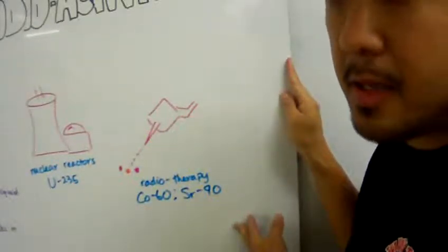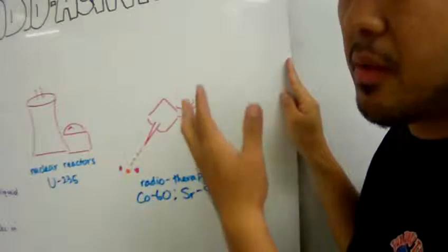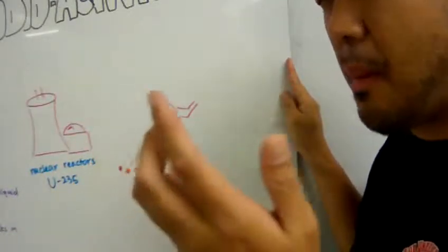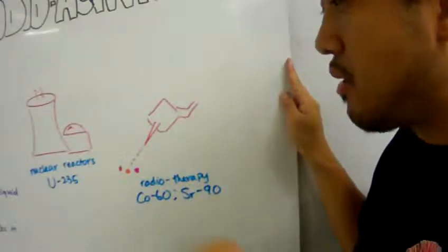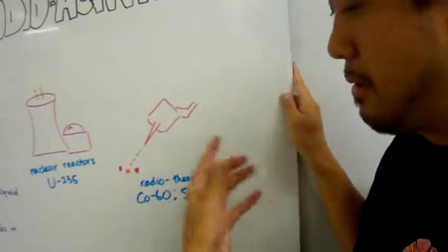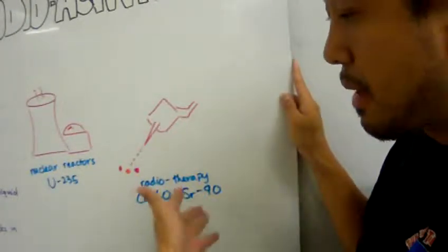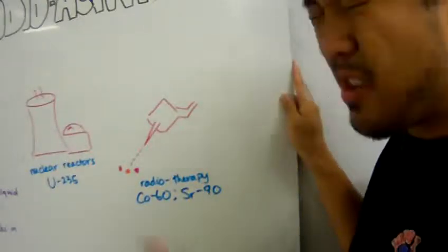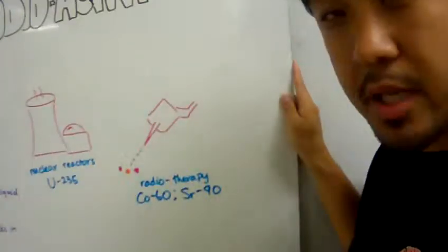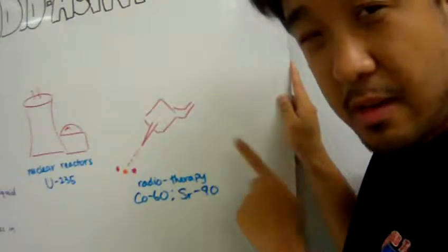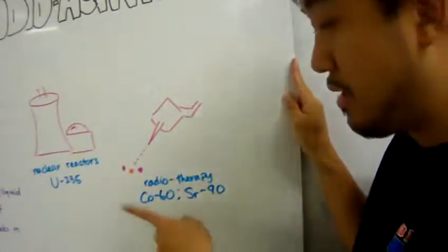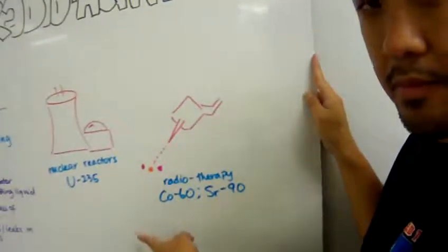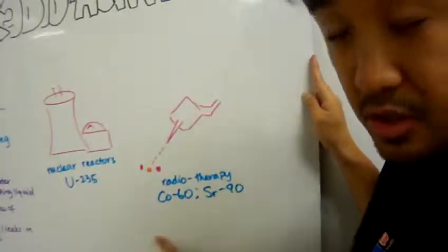Radiotherapy is used when you want to bombard certain cancer cells with radioactive materials, which will kill the cancer cells. It's important that you don't get chemotherapy and radiotherapy mixed up, because this one involves the unstable isotopes.